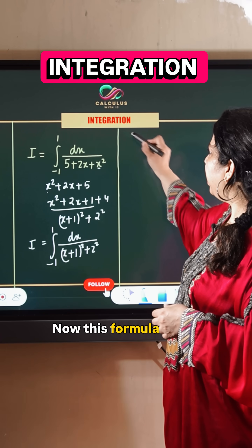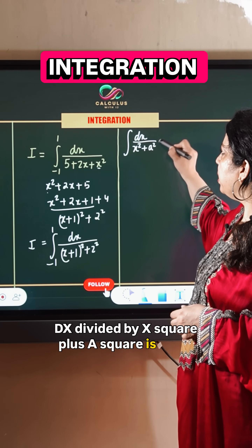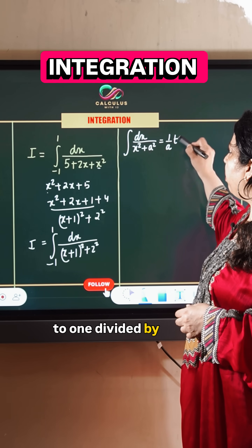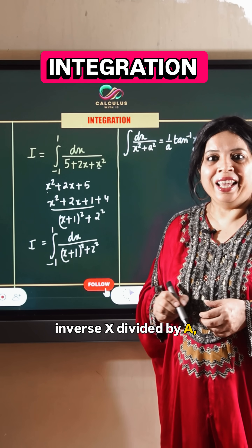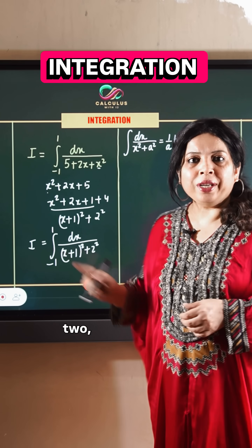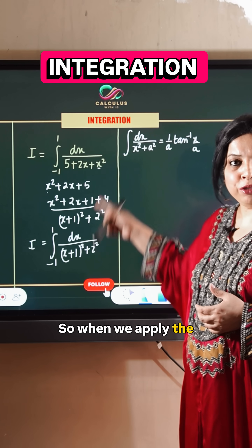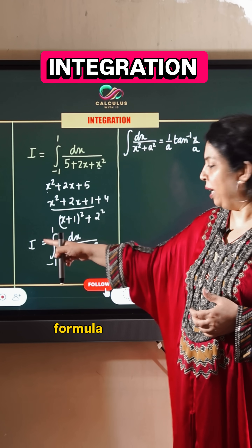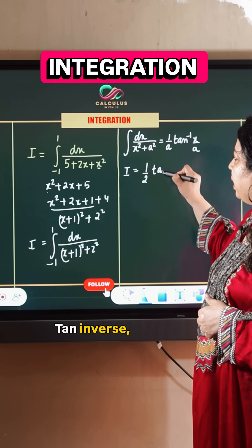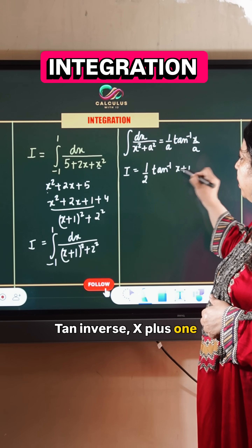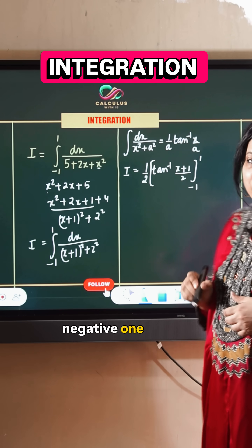The standard integral formula is: dx divided by x squared plus a squared equals 1 divided by a times tan inverse x divided by a. Here, instead of a we have 2, and instead of x we have x plus 1. Applying this formula, we get 1 divided by 2 times tan inverse of x plus 1 divided by 2, with limits from negative 1 to 1.